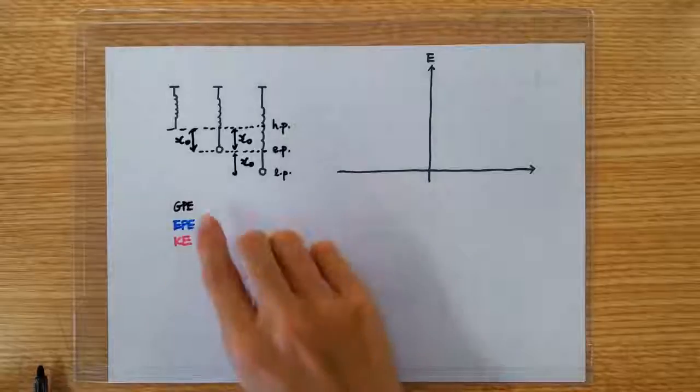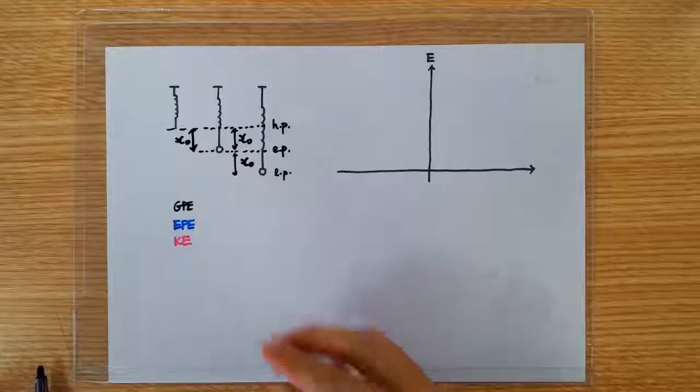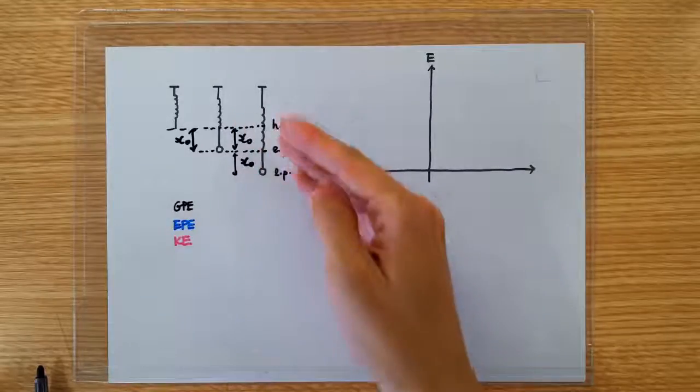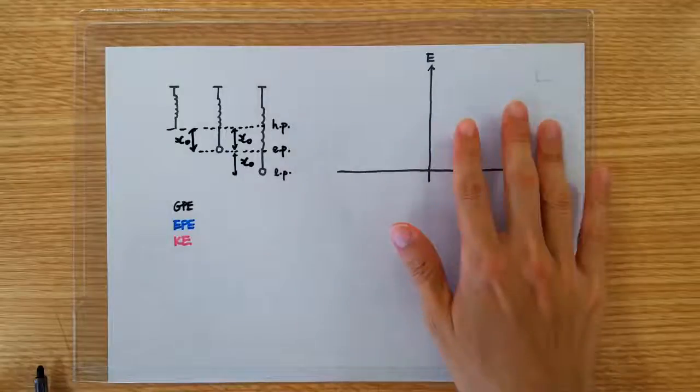Clearly, during the oscillation, the GPE, elastic PE, and KE of the SHM will vary at different positions of the oscillation. And we're going to plot the variation on this graph here.